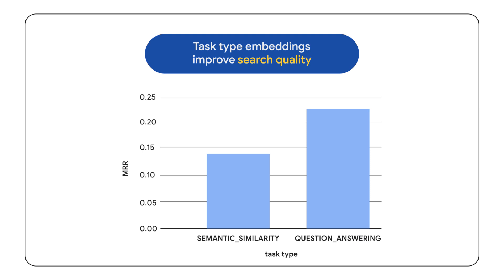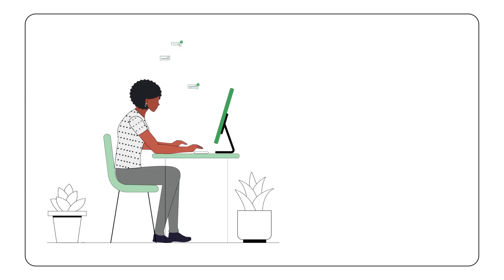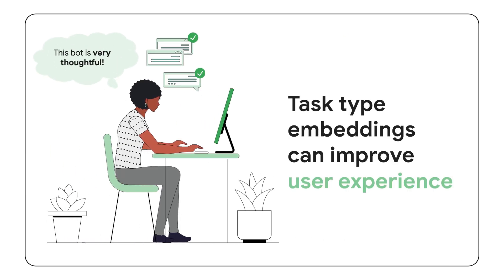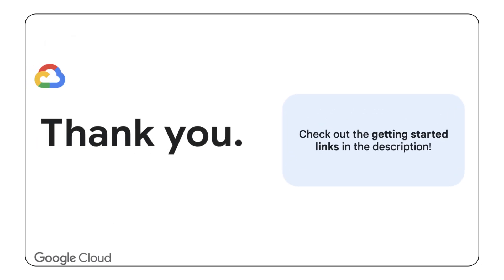Selecting the appropriate task type for your specific needs can enhance the user experience of your generative AI applications. Google has been working to optimize the semantic search quality of its major services for many years, and has packaged that knowledge and expertise into easy-to-use task type embedding models. These solutions can help you build your own RAG or enterprise search systems. If you're interested in task type embeddings, please check out the resources link in the description.